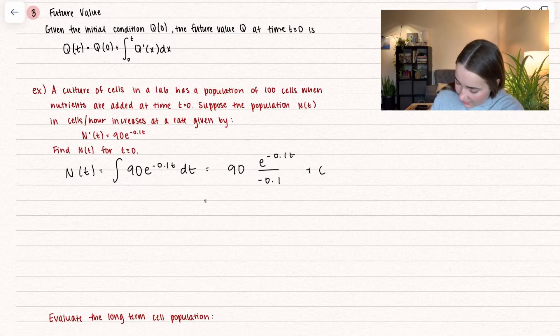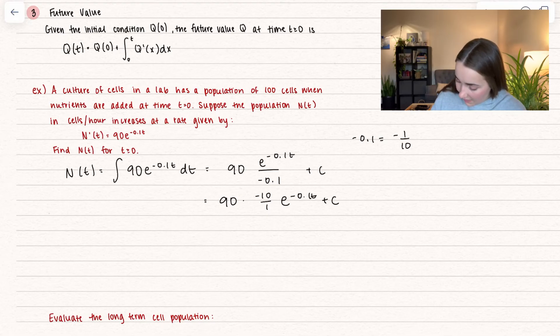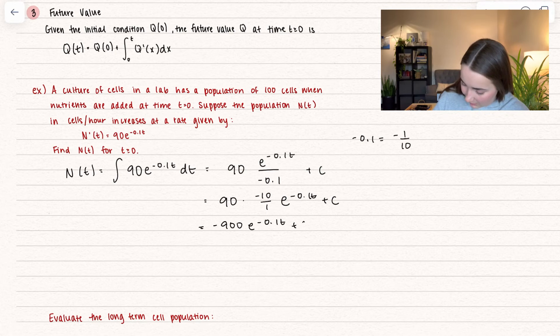Here I can rewrite this. Negative 0.1 is negative one tenth, and we're dividing by a fraction. When we divide by a fraction, we multiply by the reciprocal. That helps us simplify it. We get negative 900e to the negative 0.1t plus c.